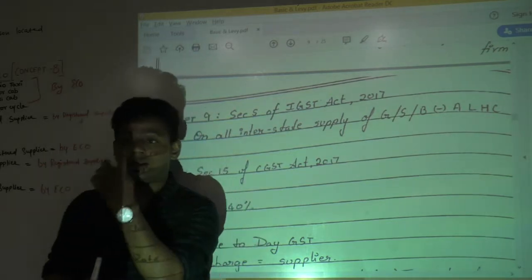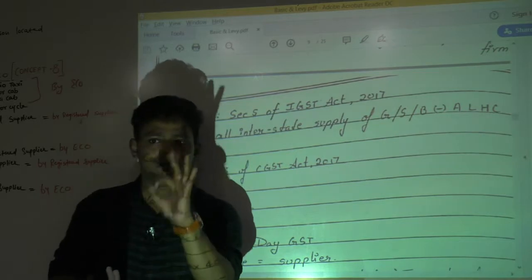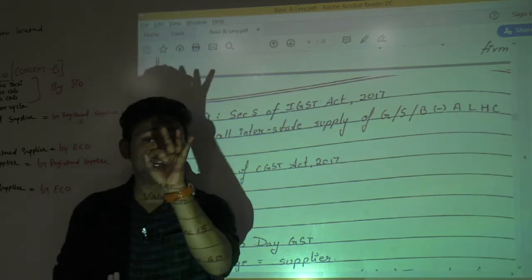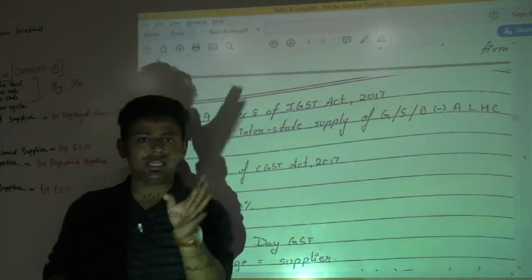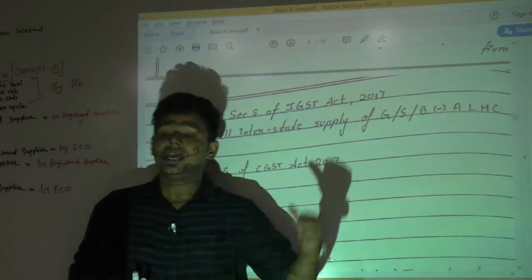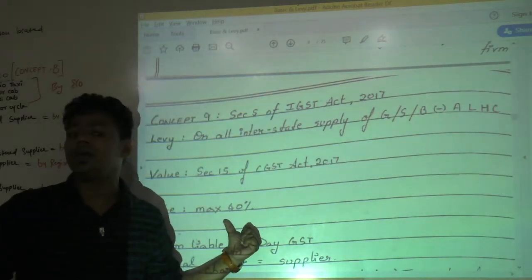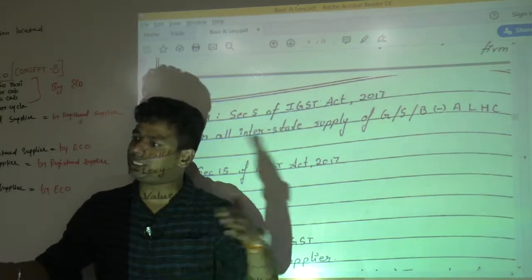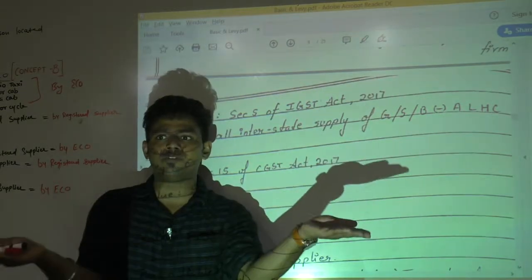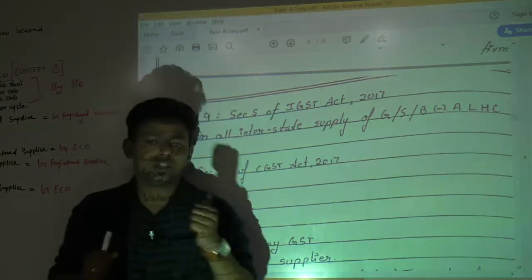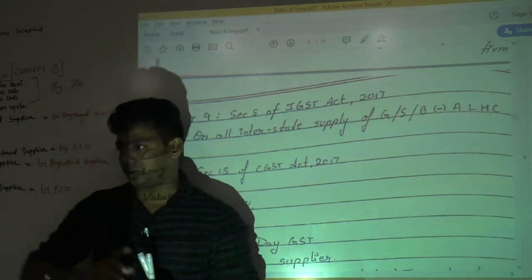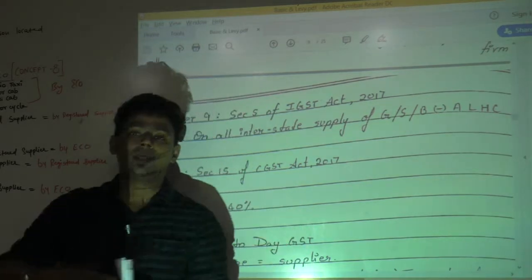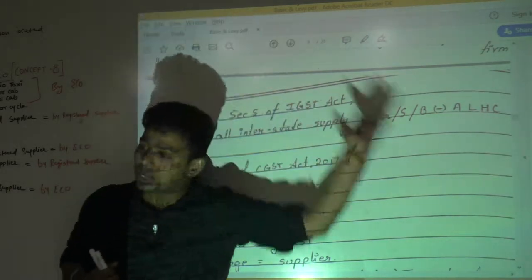Next, there we had seen tax rates will be declared by government on notification, on recommendation of GST Council. Yes or no? Yes. That rate should not exceed how much? 20%. That is written in CGST and HGST. Here also the same language is written but not exceeding 40. Why it is 40? Because integrated tax means C plus S. So 20 from CGST and 20 from HGST, total it should not exceed 40%. So it may come in multiple choice question. Not exceeding how? In CGST not exceeding 20% and in IGST not exceeding 40%. Balance whole charging section, whole.